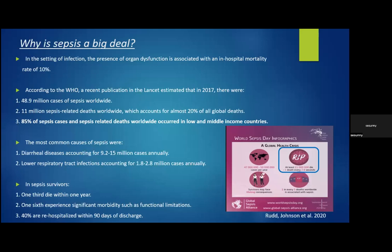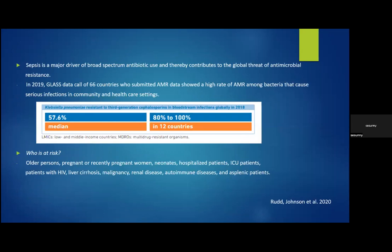Aside from mortality, the morbidity associated with sepsis shows that one third of survivors die within a year, one sixth experience significant morbidity such as functional limitations, and almost 40% are re-hospitalized within 90 days of discharge. As highlighted on World Sepsis Day, 11 million people die from sepsis — that's one death every 2.8 seconds, which is quite a scary statistic. Furthermore, sepsis is a major driver of broad-spectrum antibiotic use, contributing to the global threat of antimicrobial resistance. The 2019 GLASS global antimicrobial resistance surveillance system, which included 66 countries, showed a high rate of antimicrobial resistance in bacteria causing serious infections in community and healthcare settings.